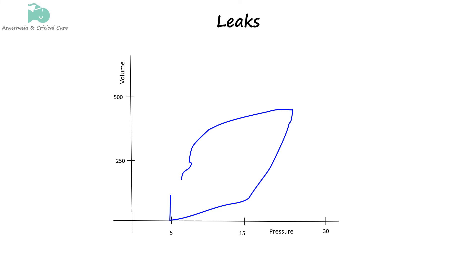Leaks in the ventilatory circuit can lead to a discrepancy between the amount of air delivered to the lungs and the amount of air returning to the ventilator. This is recognized when the inspiratory and expiratory limbs of the loop do not meet at the end of expiration, leaving a gap. The gap occurs because some of the inhaled volume is lost through the leak, resulting in less volume being exhaled.